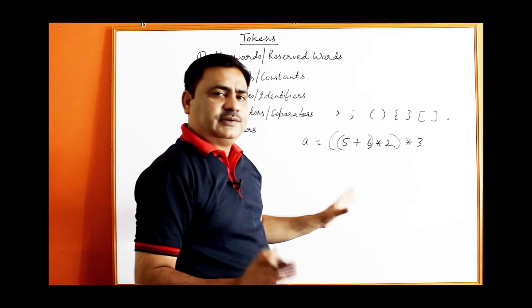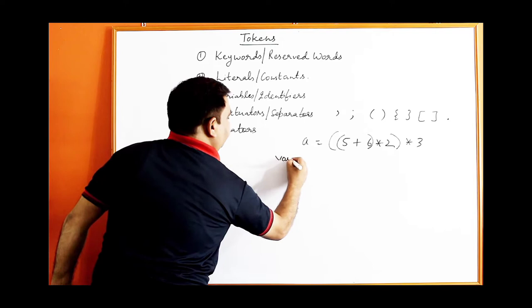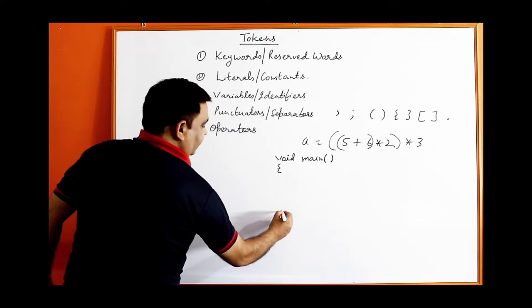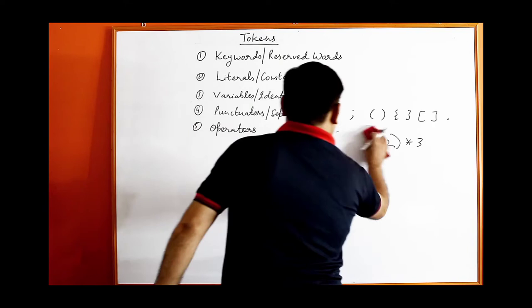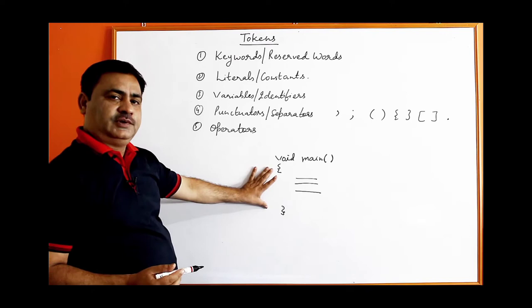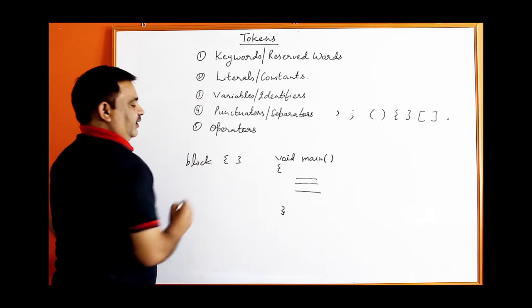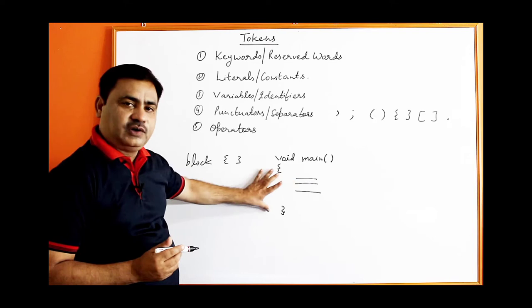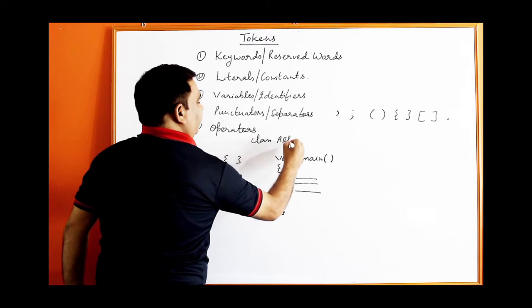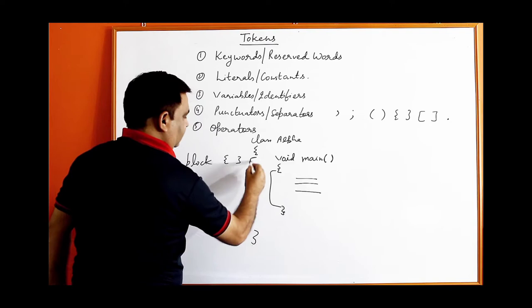While writing a function like void main, you use round brackets for the function name and curly brackets to make the body of the function. Between the curly brackets you write the instructions — this is called a block. A block is a set of instructions enclosed in curly brackets; it may or may not have a name. You can also create a class like class Alpha with an outer block and an inner block inside it.